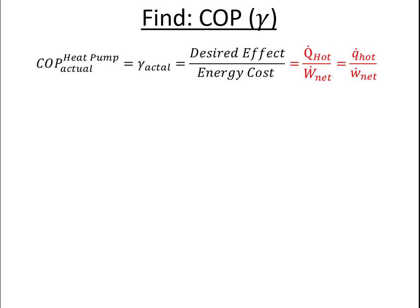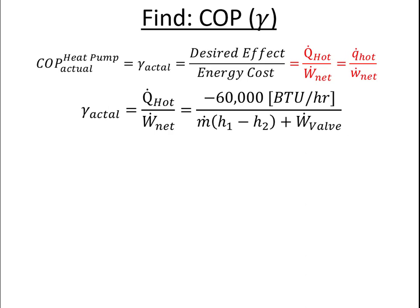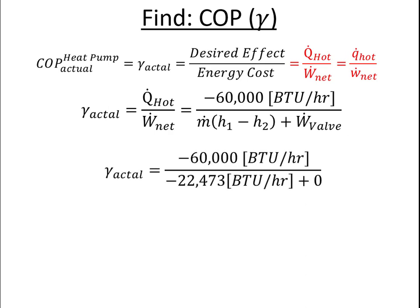Next, I find the coefficient of performance of my cycle. That's going to be the desired energy effect, divided by the energy cost, or Q-hot over net work. Q-hot, I've already calculated. Net work is essentially my compressor work, or power, plus my work done by the valve. But the valve doesn't do any work because delta H across the valve is zero. So the net power is also the power of the compressor. In this case, both values are negative. If this was a refrigeration cycle, I wouldn't get this. One value would be positive and the other would be negative. But for the coefficient of performance, I'm always going to take the absolute value. And in this case, the absolute value of the coefficient of performance is 2.67. And that is how you do vapor compression heat pump cycles.